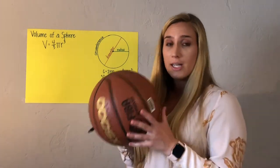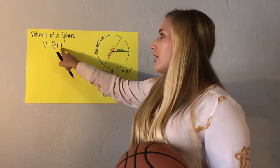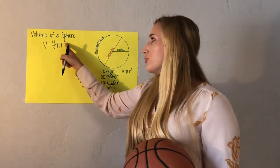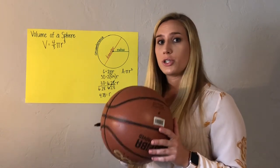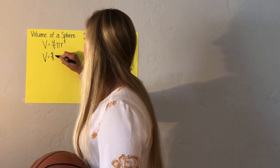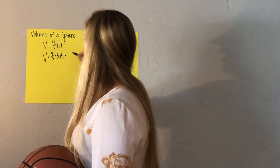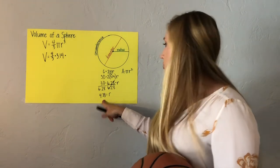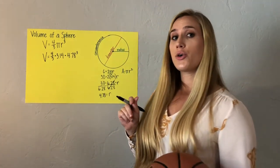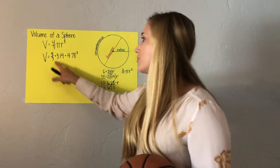Now that I know what R is, I can substitute it into the volume formula. I always remember that the formula for a sphere uses R to the third power — R cubed — because we always measure volume in cubic units. So V equals 4 thirds times pi, which is approximately 3.14, times my R value of 4.78, raised to the third power.